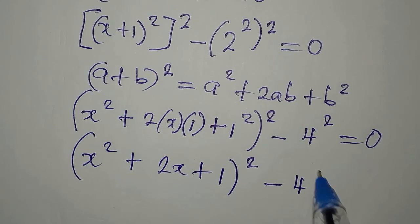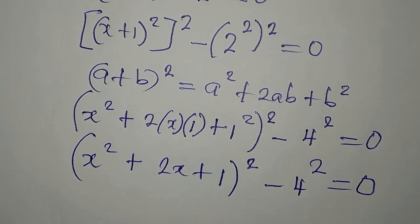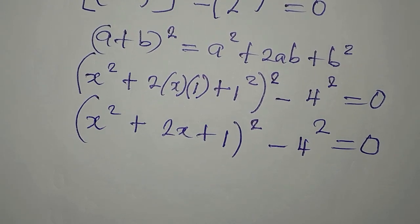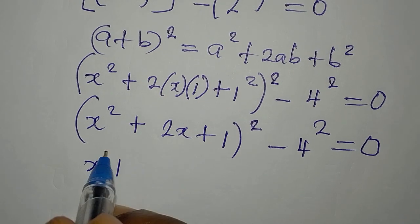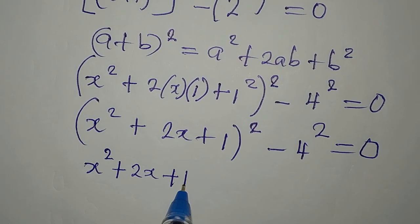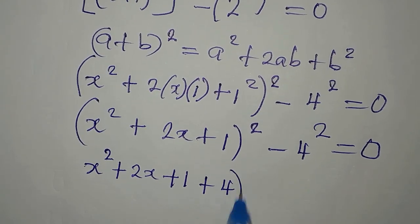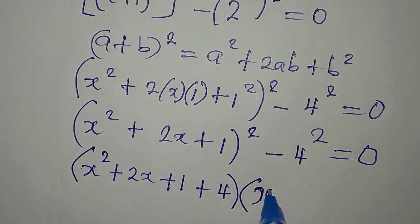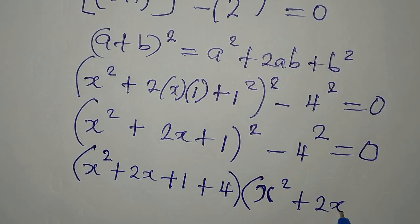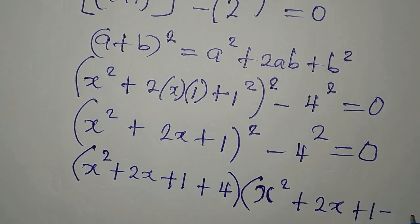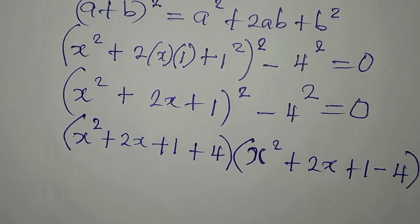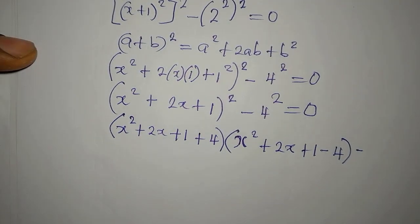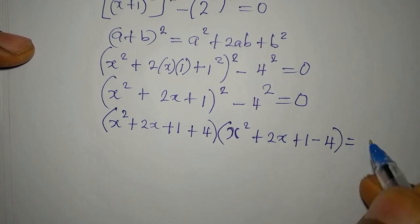Now I can apply the difference of two squares, so we get x squared plus 2x plus 1, plus 4, in one bracket, times x squared plus 2x plus 1, minus 4, in the other bracket, all equal to 0. Sorry, I wrote a bit out of sight — let me close the brackets and equate to 0.